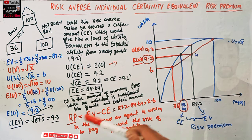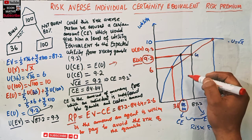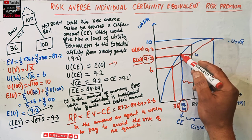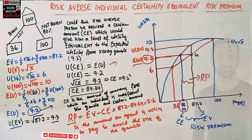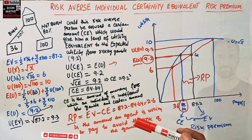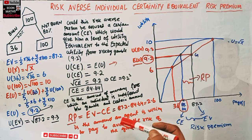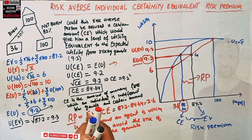The certainty equivalent is the amount of money for which an individual is indifferent between the gamble and the certain amount. The risk premium is the difference between these two points — it is the amount an agent is willing to pay to avoid the risk of the gamble, or equivalently, the amount the agent is willing to forego in order to be indifferent between the risky gamble and one with a certain amount.